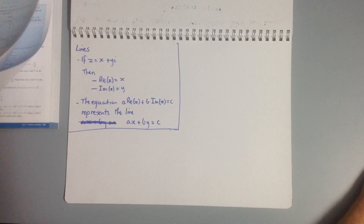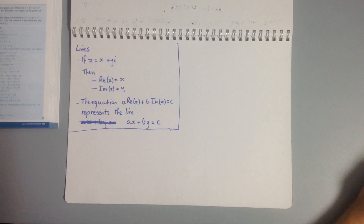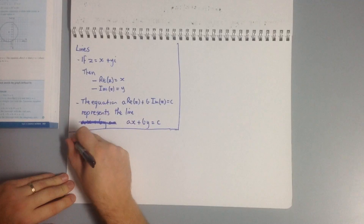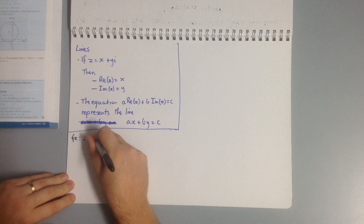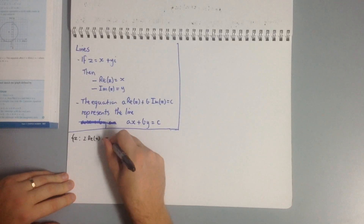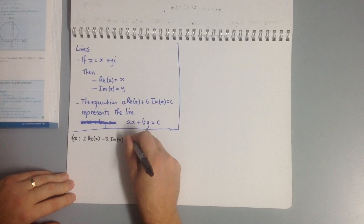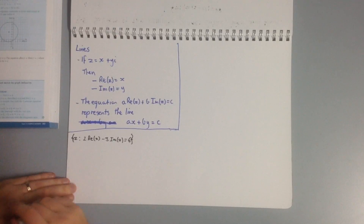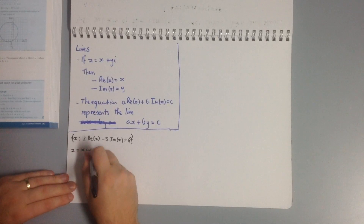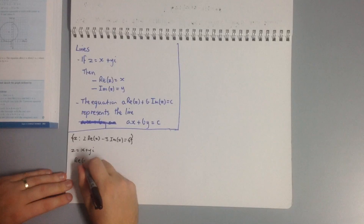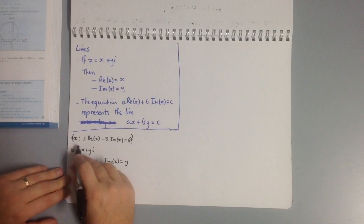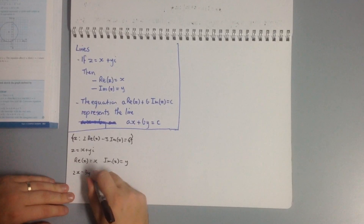We'll do a worked example for this. The equation is defined as 2 times Re(z) minus 3 times Im(z) equals 6, and we want to determine the Cartesian equation and sketch the graph. Since the real part is x and the imaginary part is y, this becomes 2x minus 3y equals 6.